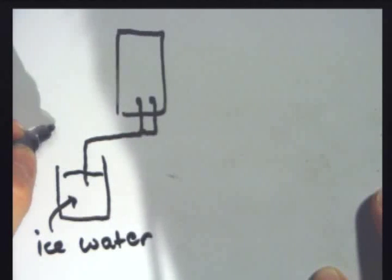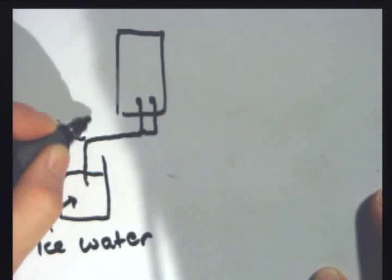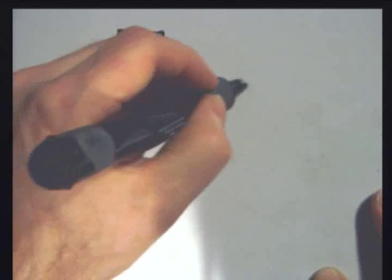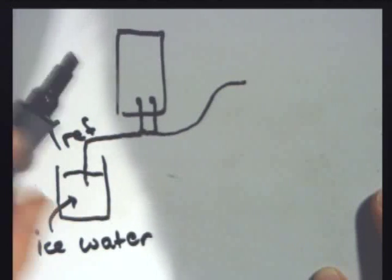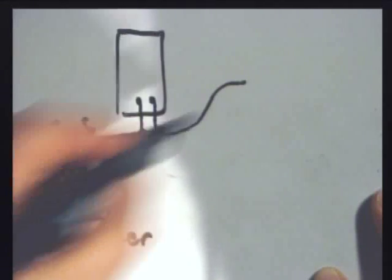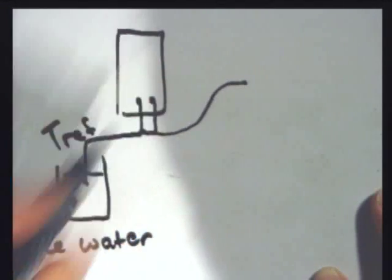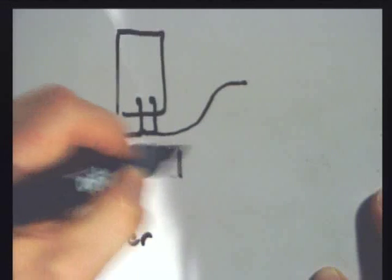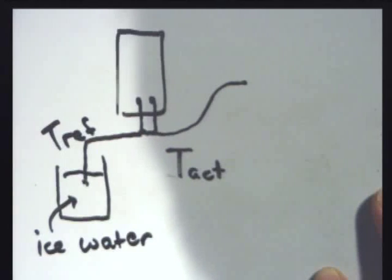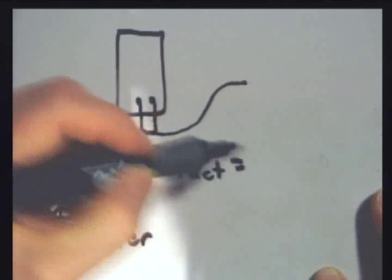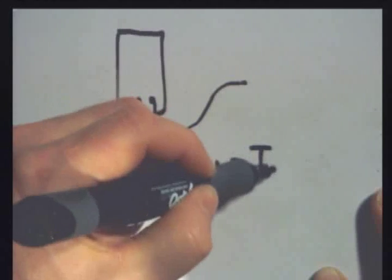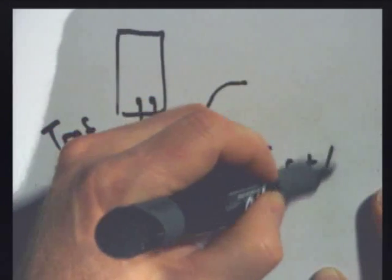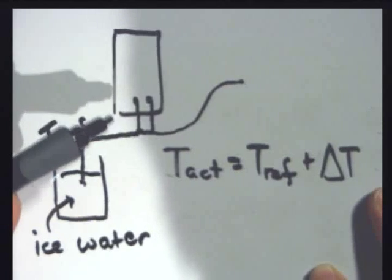This is my reference temperature, T_ref. And over here is what I want to measure. Between the reference temperature and the temperature I want to measure, that's the temperature difference being measured. So the actual temperature, T_act, equals the reference temperature plus the temperature difference that the thermocouple measures.